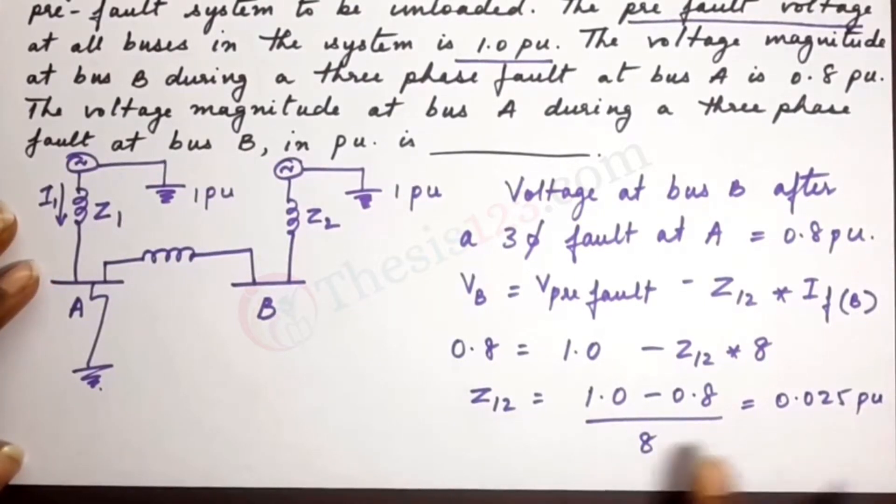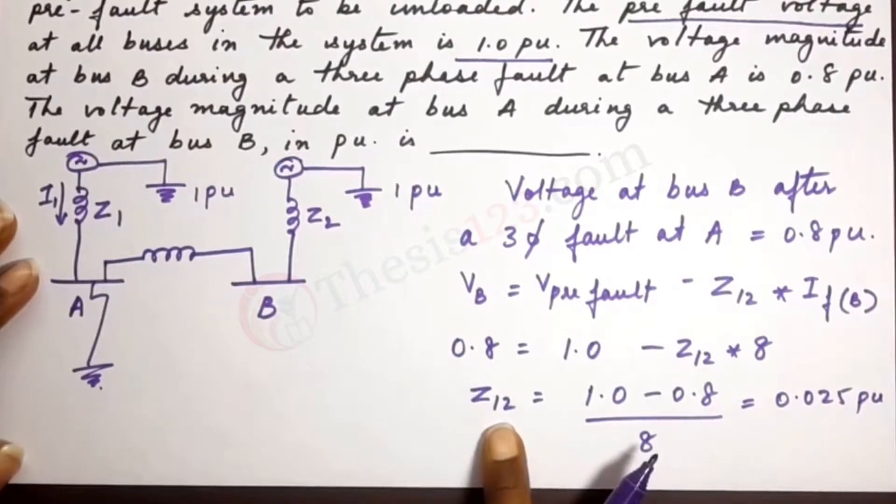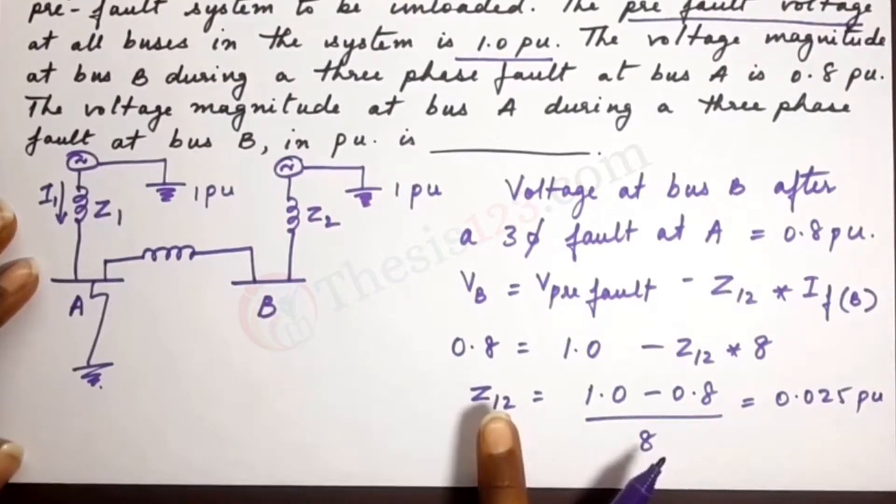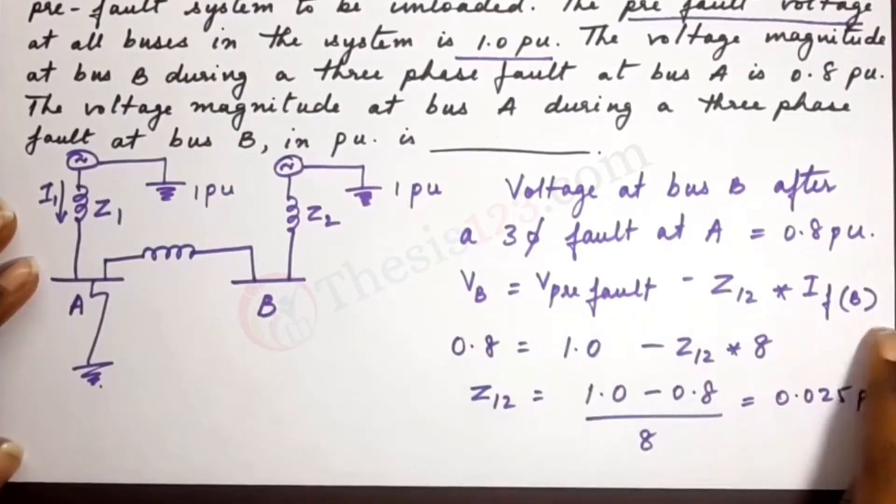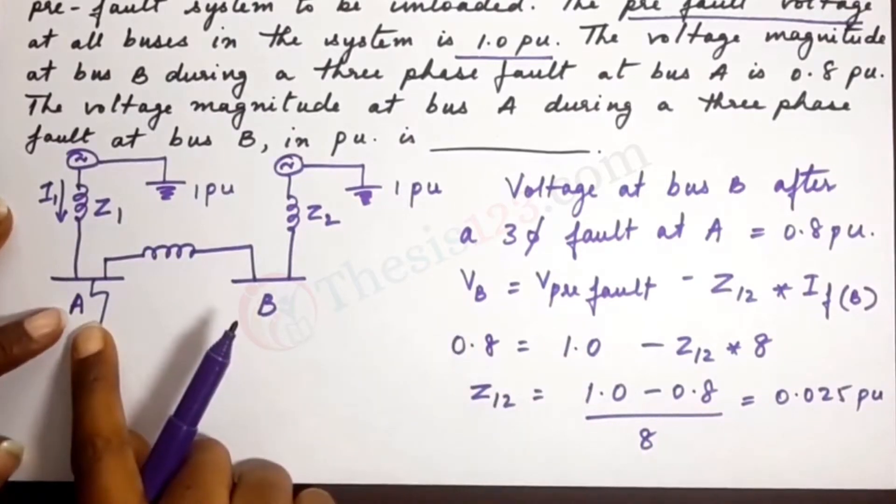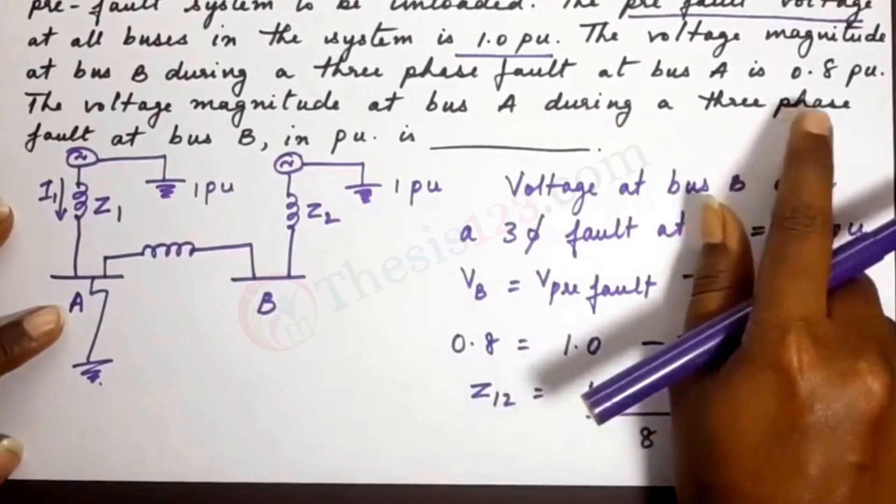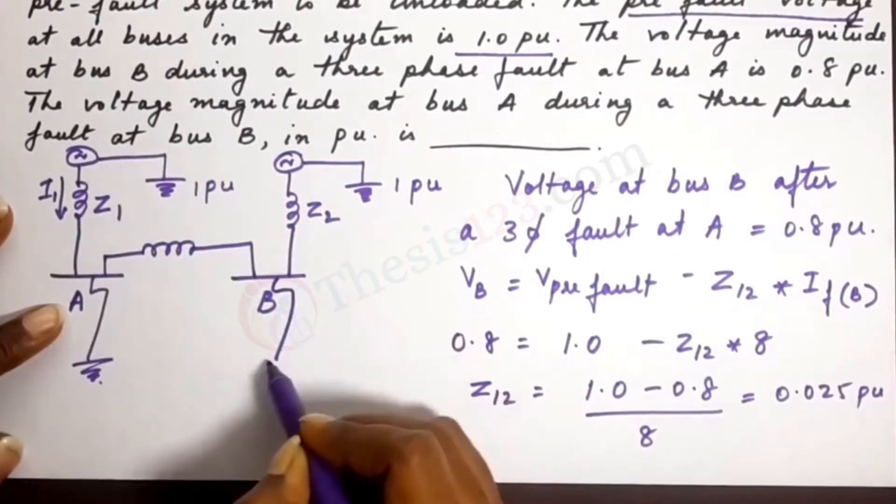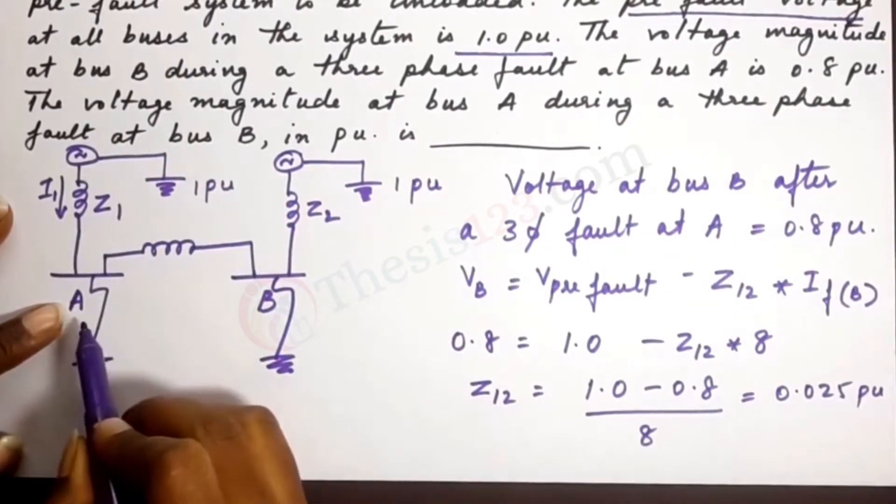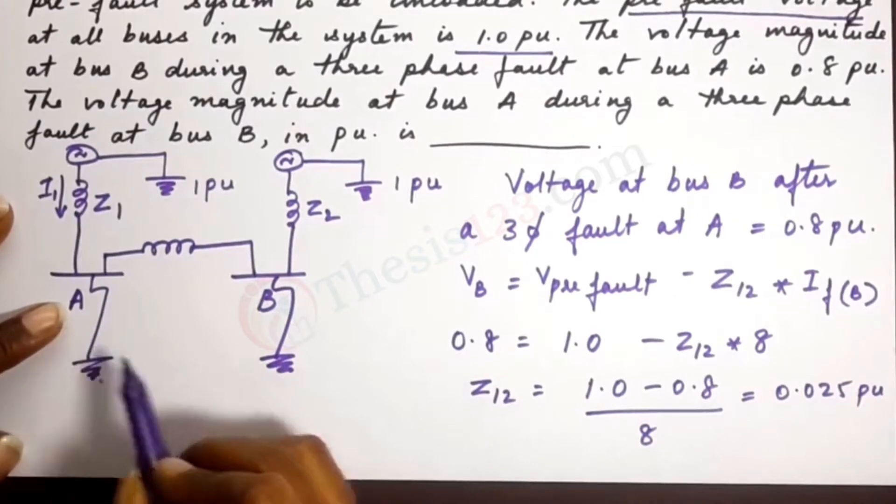And now that we have Z12, Z12 is the same as Z21. So we can apply the same formula for VA. The question says the voltage magnitude at bus A during a three-phase fault at B. Now let's say there is a fault at B. So we will have to find out what is the voltage magnitude at A.